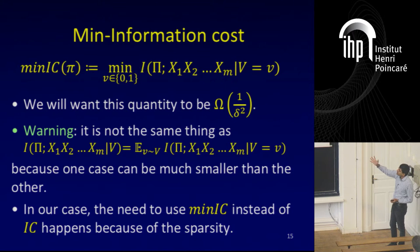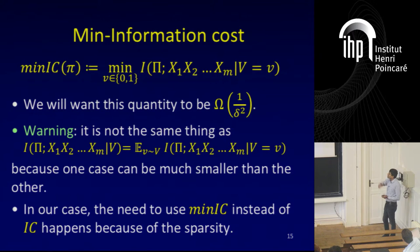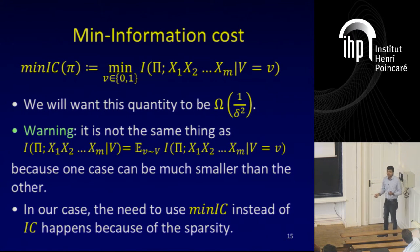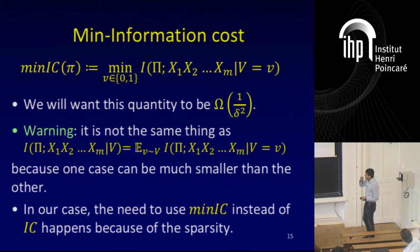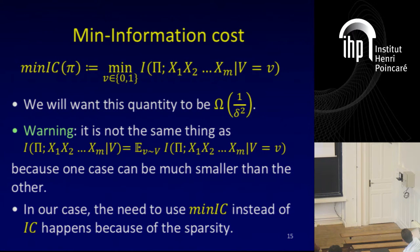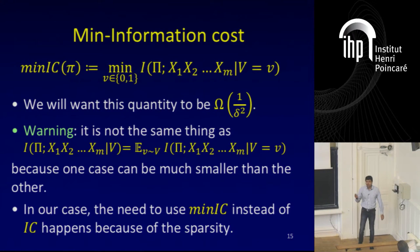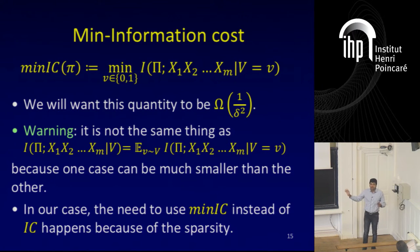We need to work with mean information cost instead of information cost because of sparsity. We want this quantity to be omega(1/delta^2). Note this is not the same as conditioning on V — conditioning takes an expectation, but we want the minimum over both cases; in principle one case could be much smaller than the other. It is trickier to prove a lower bound on min information cost than expected information cost. Previous techniques of Duchi et al. did not apply to this min information cost setting. For the CS audience, this is analogous to the proof of the lower bound for disjointness, where you measure information cost for AND only with distributions that evaluate to zero — there is an asymmetry, and that is exactly what is happening here.